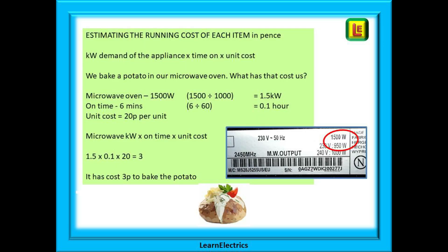So what would be the running cost of different items? We know how much power an appliance uses from the rating plate, and we know our unit cost — the cost of one kilowatt hour of electricity. All we need to do is estimate the usage time, then take the kilowatt demand of the appliance, multiply by the time in hours, and then multiply by the unit cost.